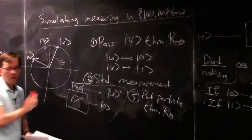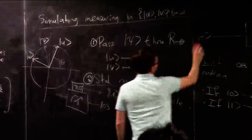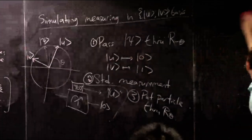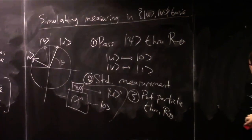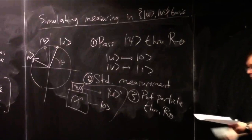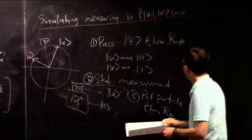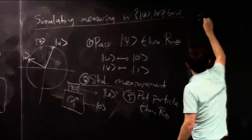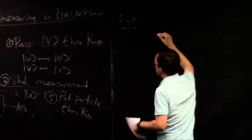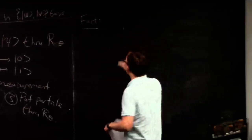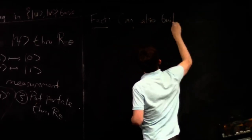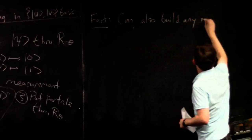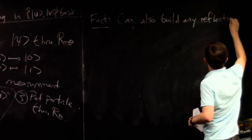That was a little side thing. In qubits, you can build a physical device that does any rotation operation you want. You might ask: what else can you do? What else is physically allowable according to the laws of quantum mechanics? Another thing that turns out to be physically allowable is that you can build a reflection operator through any line.